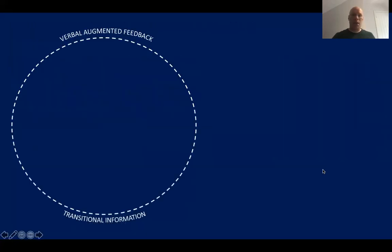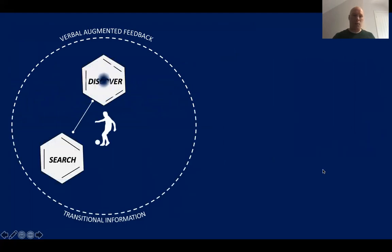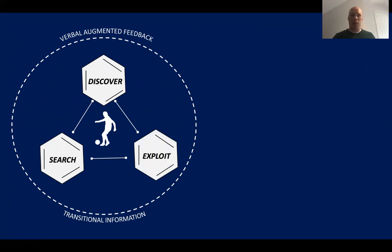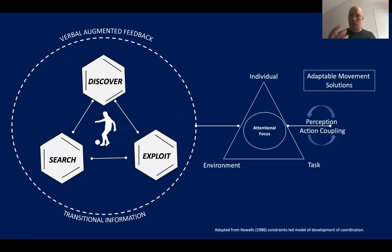This is based on three core principles: the first being to search for information from the environment, discover, and latterly exploit. These three principles exist within every use of transitional information, where the coach is priming the athlete to attune to affordances, searching for information from the environment, and discovering key information sources needed to create a movement solution — and then exploiting time and space. This is based on a constraints-led approach, Newell's work and Gibson's work around perception-action coupling, because we know that perception and action are coupled: we move in order to perceive and we perceive in order to move. How coaches manipulate constraints within practice to guide the attentional search of the footballer is really key here.